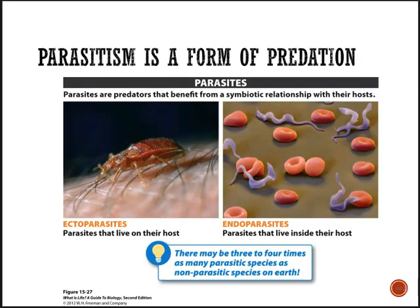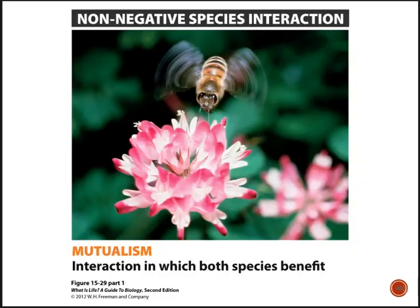Parasitism can also be thought of as a form of predation. Parasites are predators that live with or on their hosts, taking a very long time to consume them. Ectoparasites live on the outside of their host; endoparasites live inside their hosts.